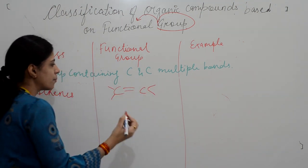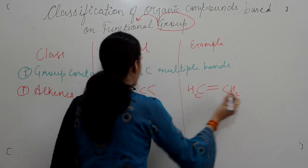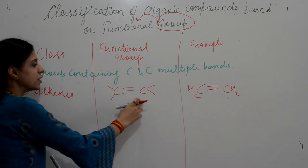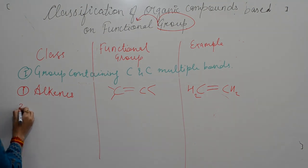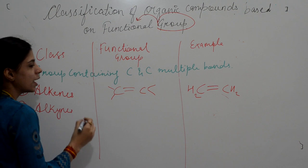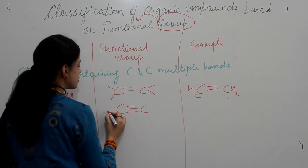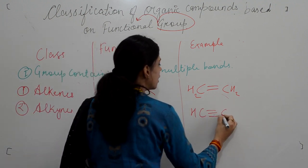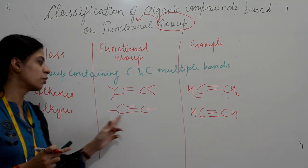The example of alkenes can be ethene. Alkenes are the class in which a double bond is present between two carbons. Second is alkynes — compounds in which a carbon-carbon triple bond is present. Example: ethyne. You can attach any number of carbon chains on both sides.